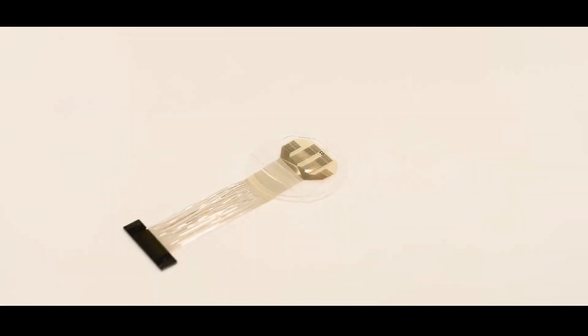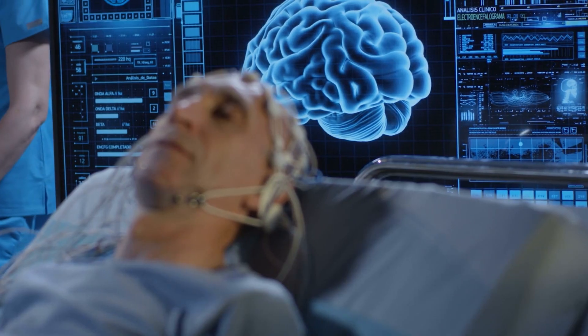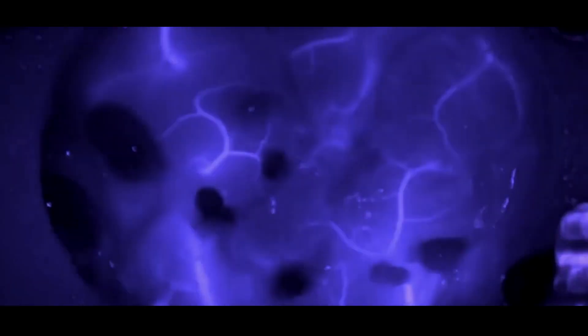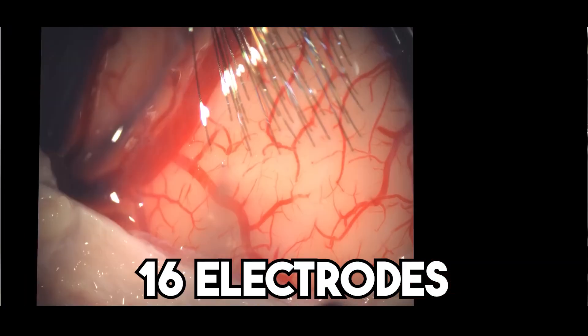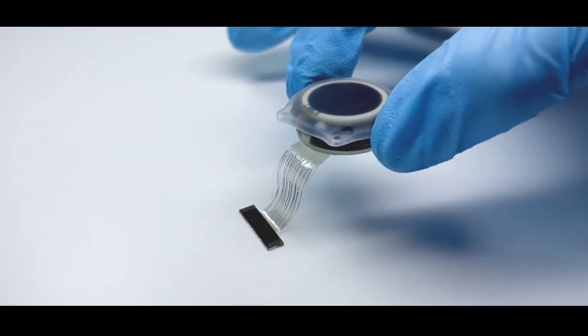The microfabrication of Neuralink's electrode wires was one of the procedures that they specifically discussed. These are the probes that are put right into the cerebral cortex brain tissue. Currently, the N1 implant is connected to the brain using 64 different wires, each carrying 16 electrodes for a total of 1024 communication channels. According to Neuralink, they make these wires using a thin film microfabrication process.